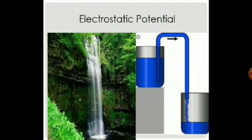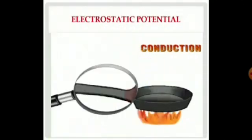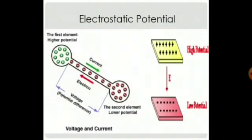Let's see about electrostatic potential. Water or a liquid flows from a higher level to a lower level. Heat always flows from a body at high temperature to a body at lower temperature. Similarly, there is a tendency of a positive charge to flow from a point of higher electric level to a point of lower electric level. This electric level deciding the direction of flow of electric charges is called electrostatic potential.